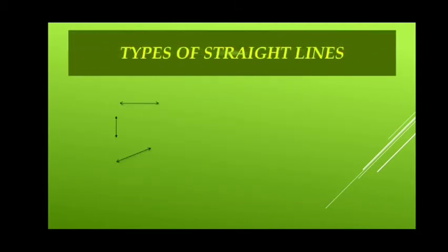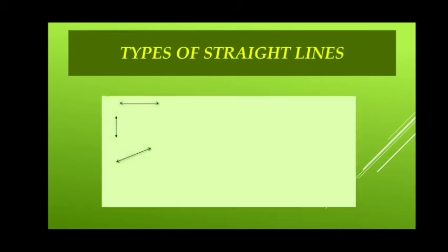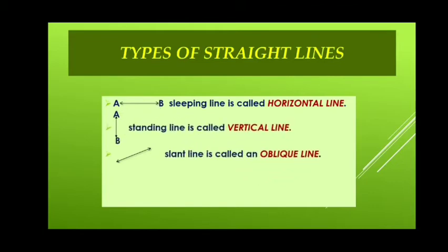Let's learn about different types of straight lines. Sleeping line is called horizontal line. Standing line is called vertical line. Slant line is called an oblique line.